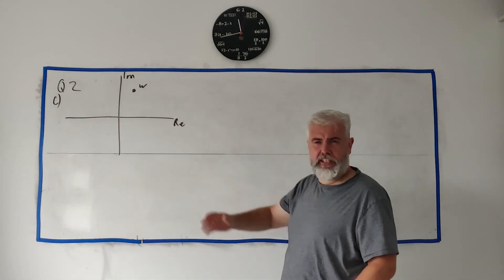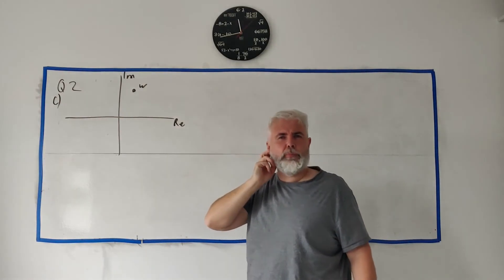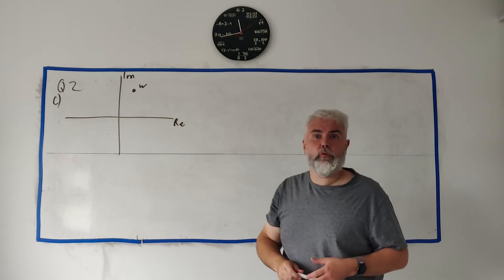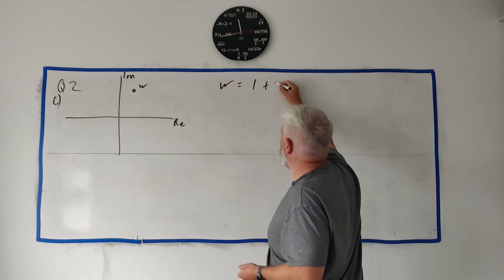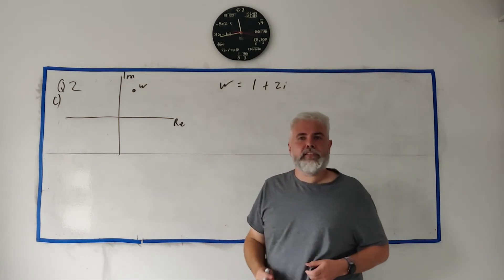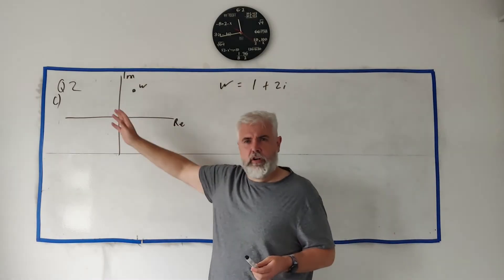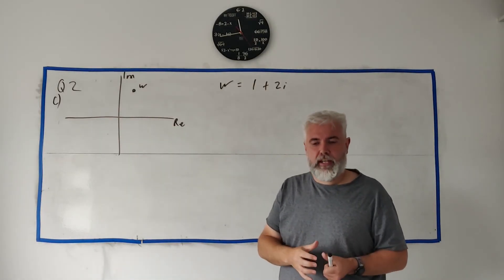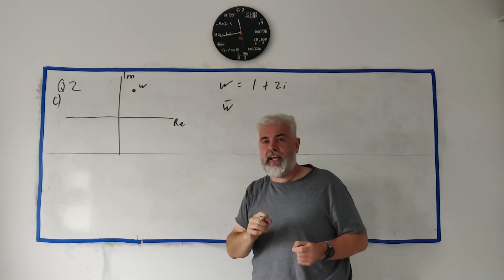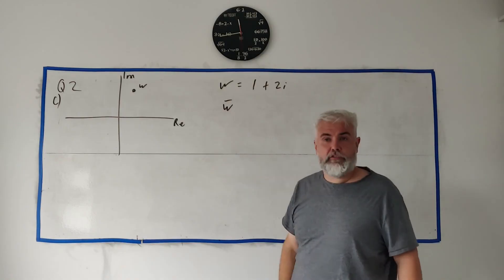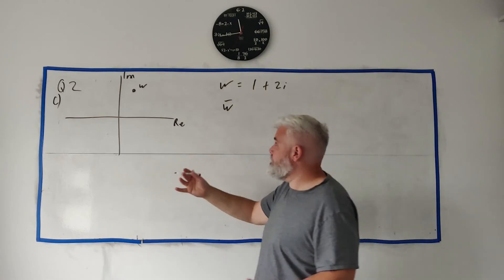In part C, they give us a diagram sort of like this. They have w on the diagram. They even tell us w is 1 plus 2i. That's not really important to us here, but let me write it in. w equals 1 plus 2i. They ask us which of these other numbers, I haven't drawn in other dots up here, but they ask us to find w with a line. This is the complex conjugate of w. And they give us three options where it is. They're basically asking where is it. And they give us three options.